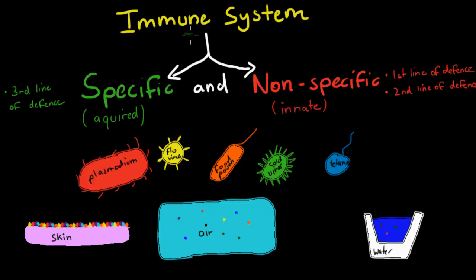In this video, we're going to talk about the immune system. The immune system is just a system that helps us defend our body. The reason why we need to be defended is because there are actually lots of microbes and pathogens in our body and on our body.